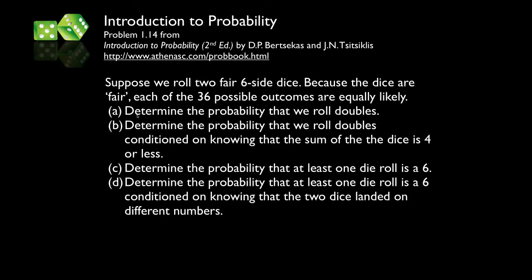We'd like to determine: the probability that we roll doubles; the probability that we roll doubles conditioned on knowing that the sum of the dice is four or less; the probability that at least one roll is a six; and the probability that at least one roll is a six conditioned on knowing that the two dice landed on different numbers.